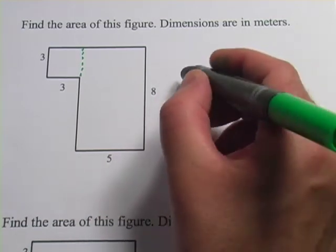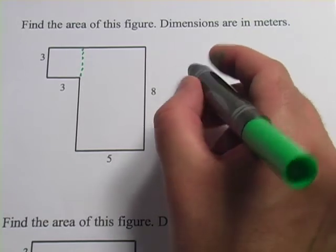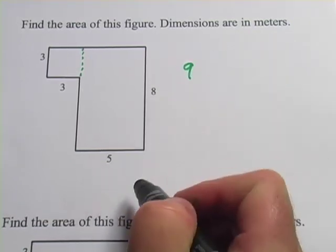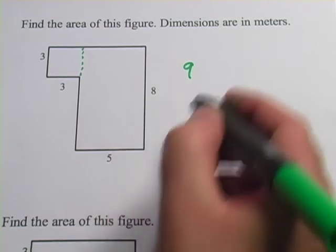The area of a square is the side squared, or in this case 3 times 3, which is 9. The area of a rectangle is the length times the width, that's 8 times 5, which is 40.